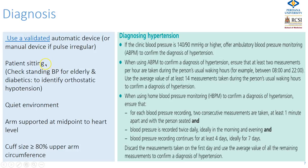When you see blood pressure being measured in clinics it often is not done correctly, but this is how it should be done. The patient should be sitting and resting for 10 minutes before the blood pressure is checked. For elderly patients and diabetics, you should check blood pressure sitting and standing to identify orthostatic hypotension. The environment should be quiet, the doctor or nurse should not be speaking to the patient at the time of measurement, the arms should be supported at midpoint to heart level, and the cuff size should be appropriate for the upper arm circumference.